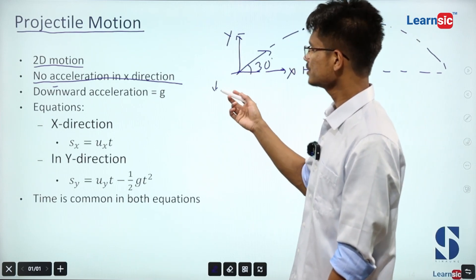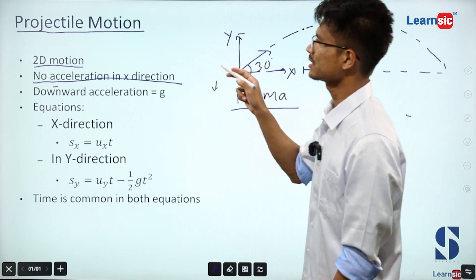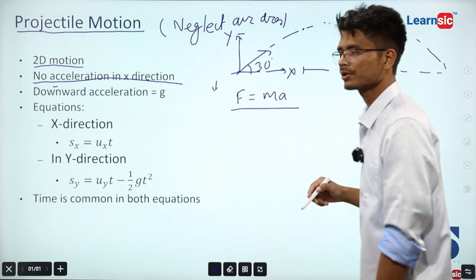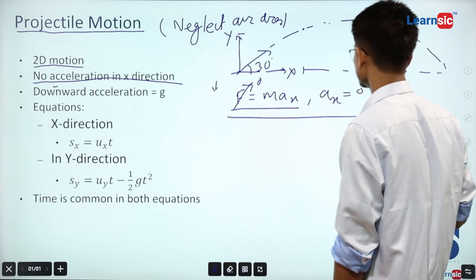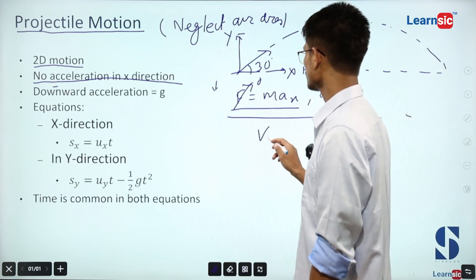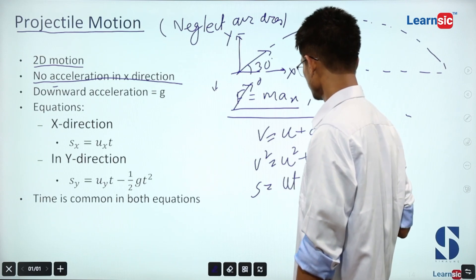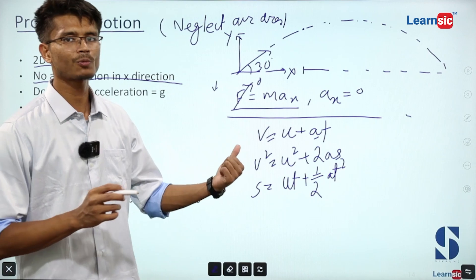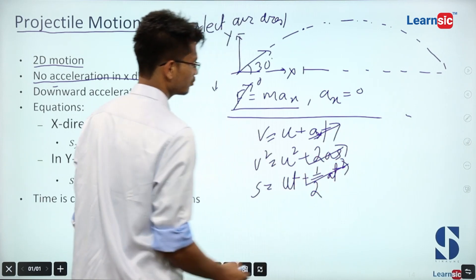We know that F equals MA, force equals mass times acceleration. In x direction, there is no force if we neglect air resistance. So in x direction, acceleration is zero. Therefore, we get v equals u, meaning velocity remains constant in the x direction.